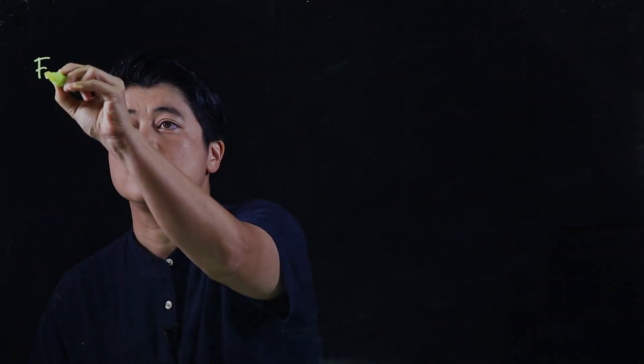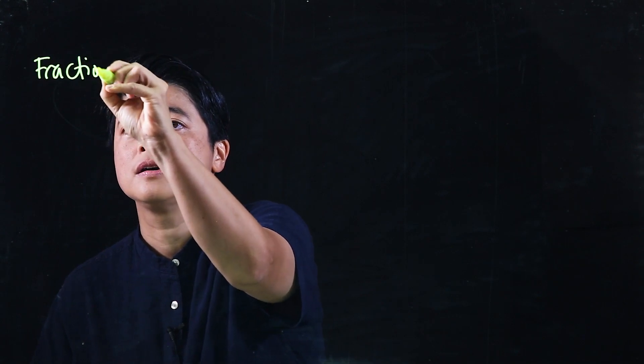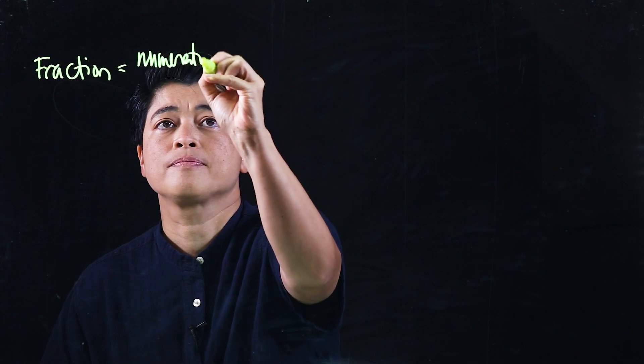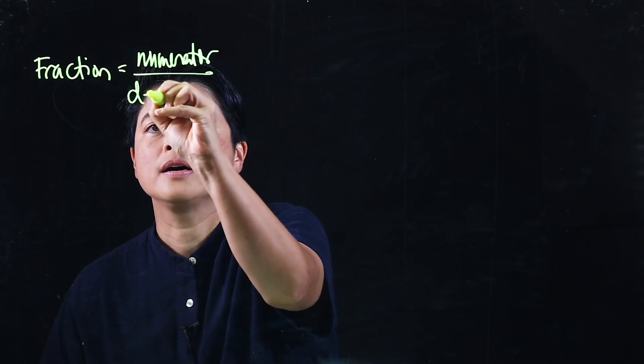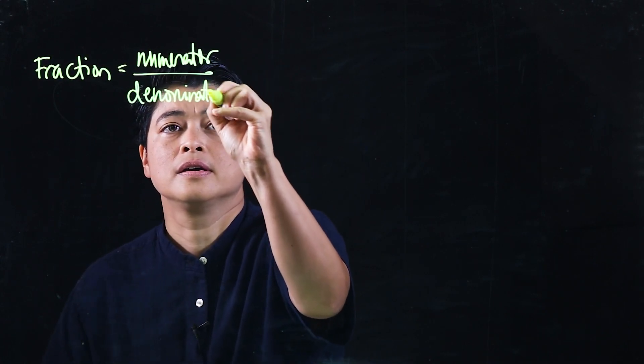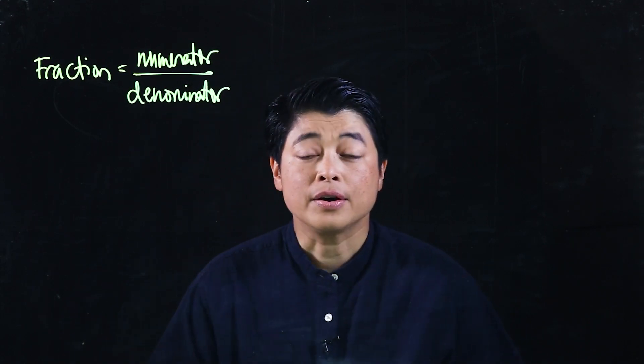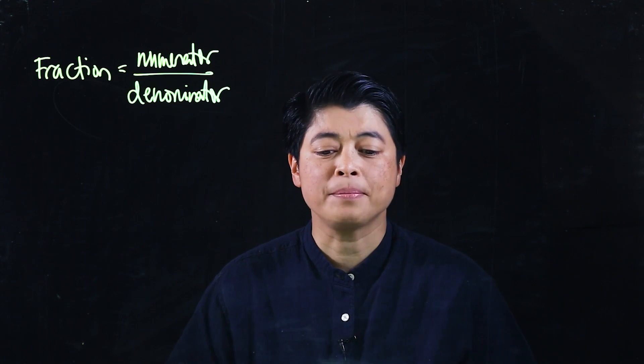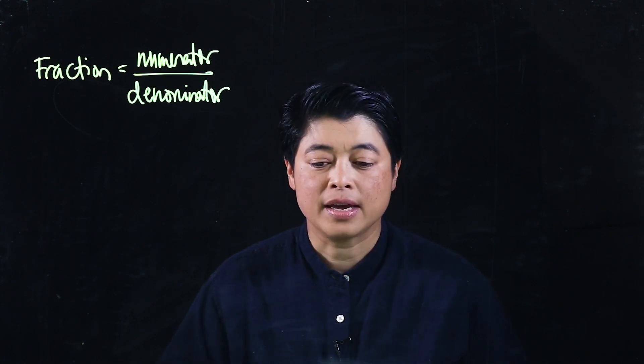Fractions work by taking a whole and dividing it into equal parts. A fraction has two parts: the top number, which is the numerator, and the bottom number, which is the denominator.